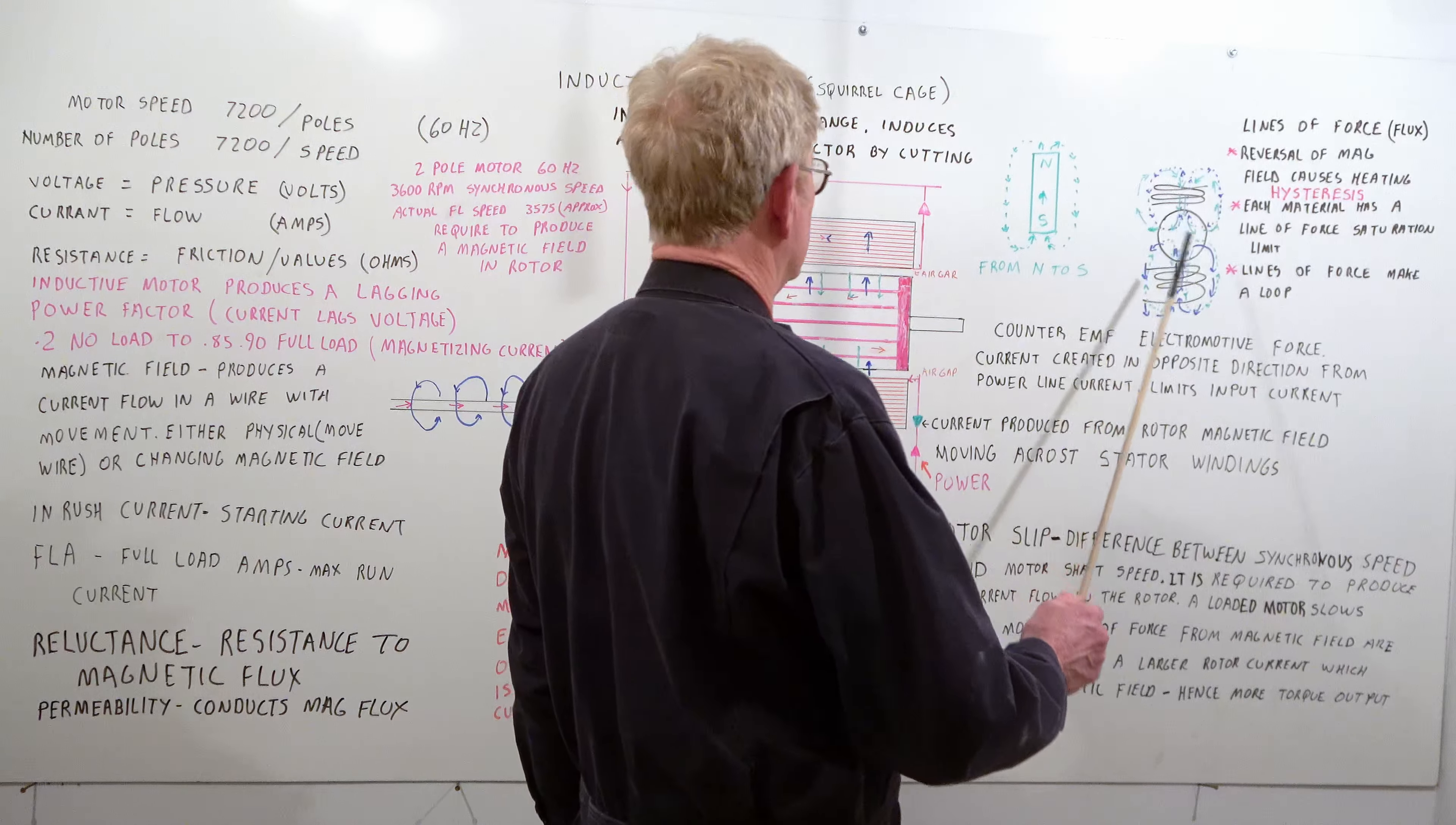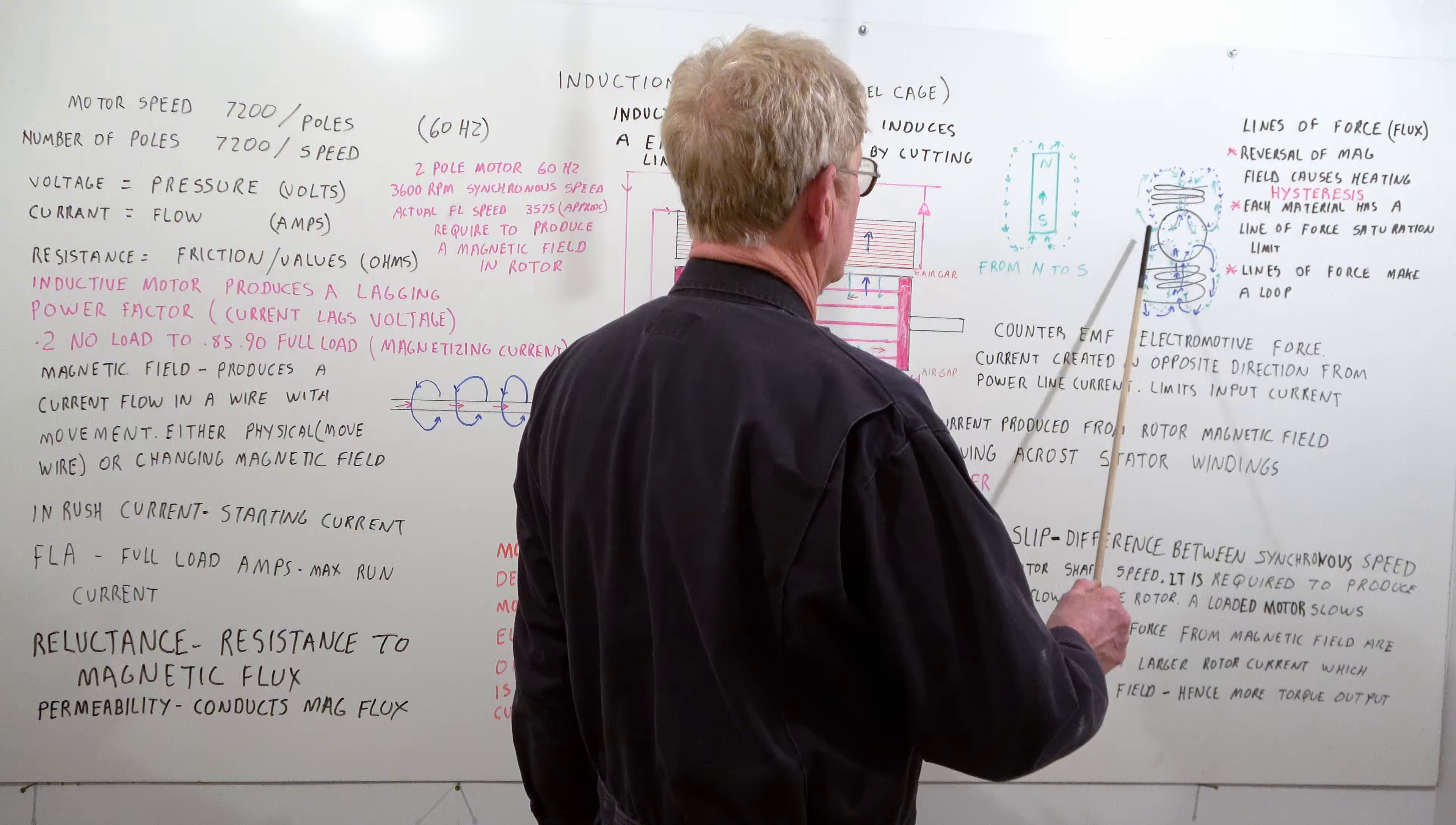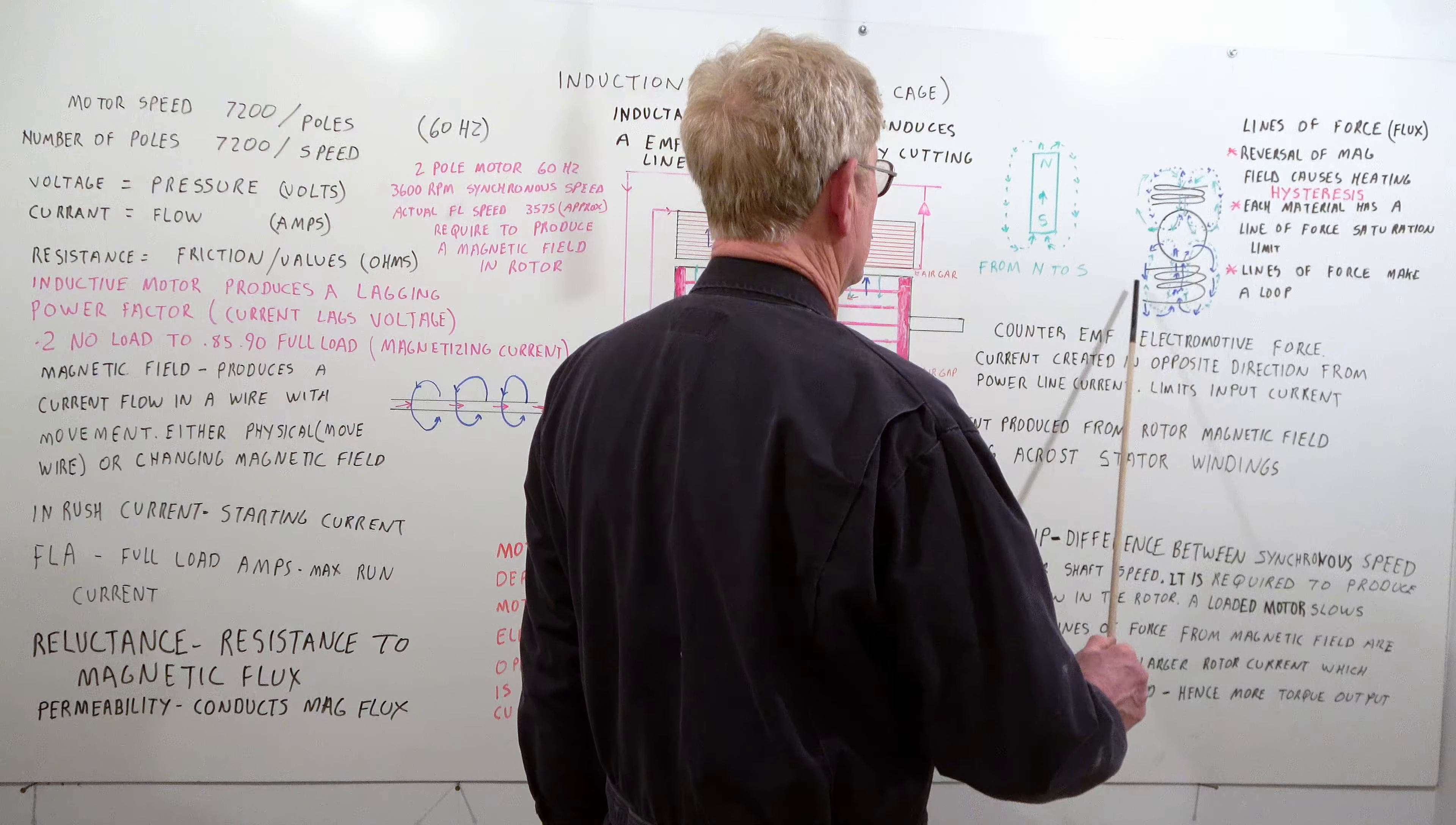Lines of force make a loop. Kind of primitive drawing of our rotor. We have our stator. Magnetic field is produced this way, it goes through the rotor and back around. And then this creates the reverse magnetic field that comes through here back through the rotor. So they oppose each other in the winding.